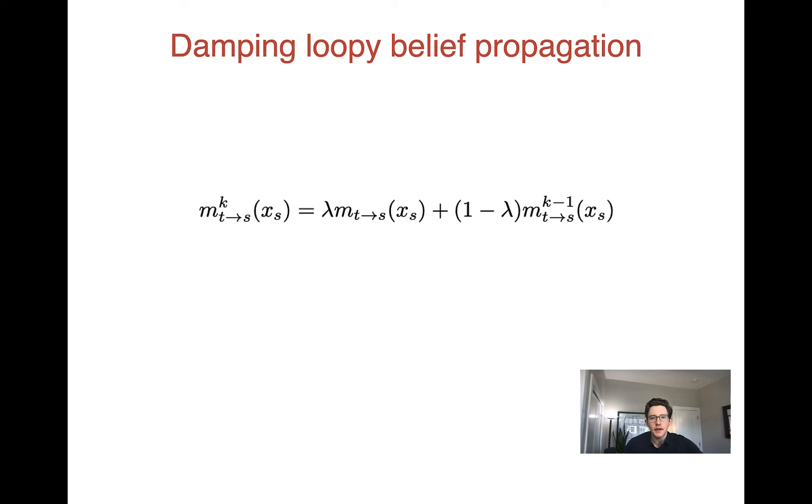And that is damping the messages in loopy belief propagation. So that is, what we're going to do is we want to compute the message from node t to node s. Again, that's going to be a distribution over xs because we're going to s. And we're going to do this for iteration k. Now, normally what we would do is ignore the second term. We would just compute our message from t to s, and that's going to be a function of the other messages going to t and the potentials in t using the algorithm that we just talked about. But we can often do a little bit better by doing the following. We take our message that we just computed and we do a weighted sum with the message we got at the last iteration.